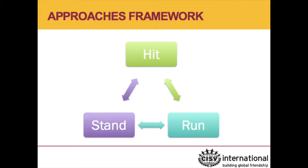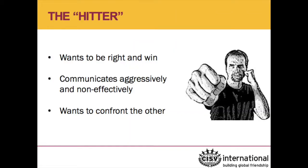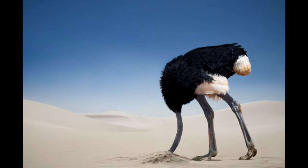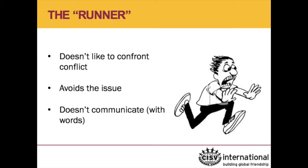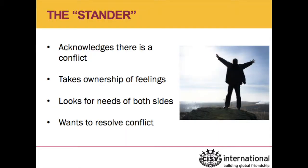The next framework is the approaches framework, or hit, run, stand. The hitter is the one visibly in conflict — not necessarily literally hitting, but wanting to be right, with aggressive and ineffective communication. They are usually not afraid to confront, which is the good thing about hitters, but they don't confront it constructively. The runner is like an ostrich with its head in the ground — the person that just does not want to be involved in the conflict. The good news about the runner is that they really want everyone to get along, so they are peaceful at heart, but running from the conflict doesn't resolve it and often leads to escalation. The stand, of course, is what we strive to be — acknowledging there's a conflict, being aware of your feelings and the facts, and really wanting to understand the needs of both sides.